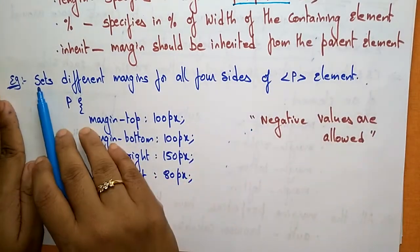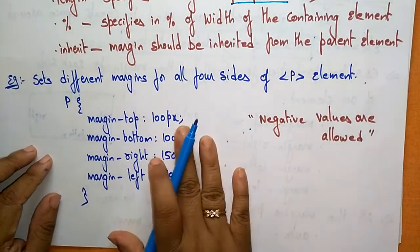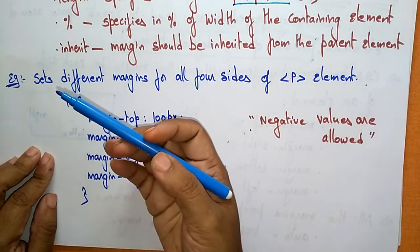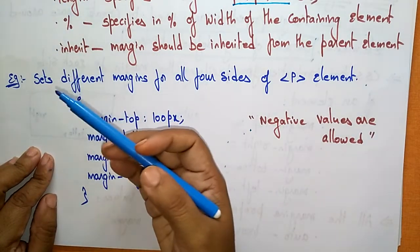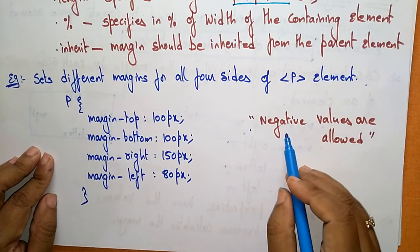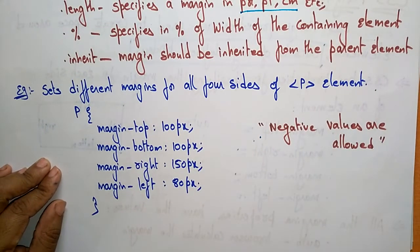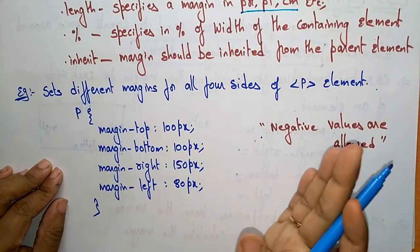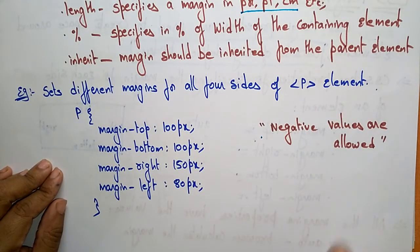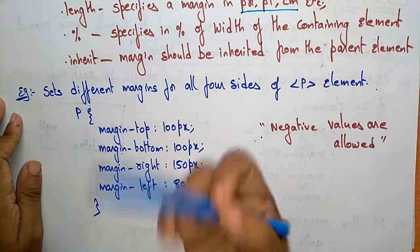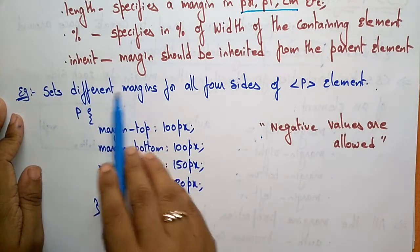Let me take an example here. One more thing you have to remember: whatever values you're taking for the property, that value may be negative also. In the case of margins only, negative values are allowed. But if you go for padding, negative values are not allowed. I'll explain that in the next video.